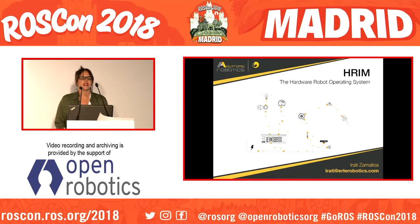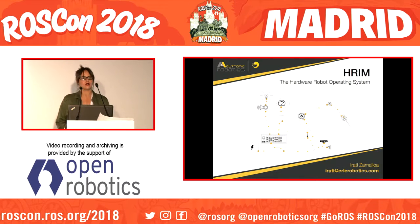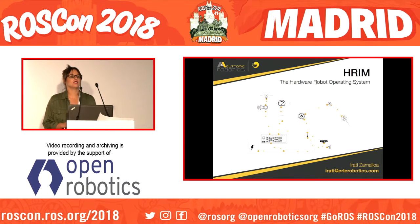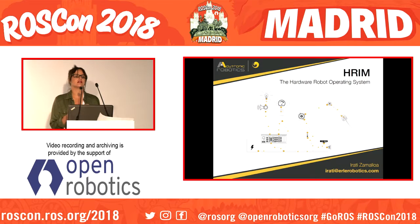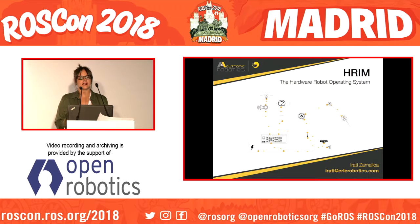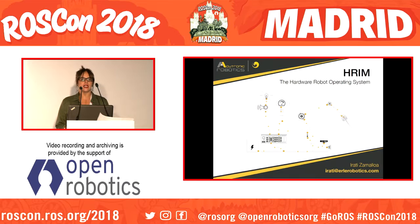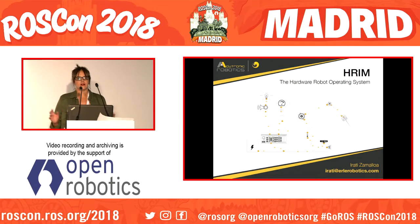Atrium is an information model for robot components, and it's going to help us reduce integration time. It allows us to unify all the software aspects inside the modules. Atrium standardizes the topics, the messages, the parameters, and the actions of all kinds of robot components.